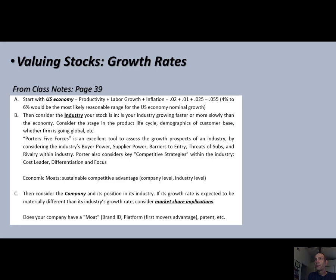We saw really fast growth from Walmart, but at this point all they can do is add more stores, and they've already saturated the US market. In the US, they can only grow with price increases — basically inflation. A firm like Netflix eventually reaches the entire world population and can only grow with population growth. So that 4% to 6% is very important because you'll use that number somewhere in your analysis.